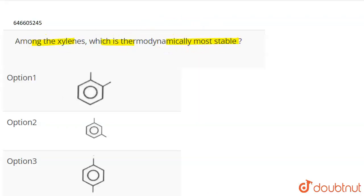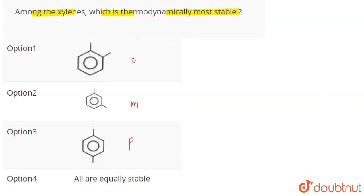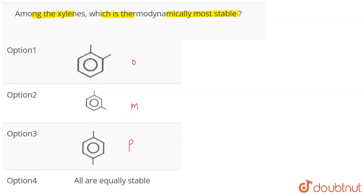So this is ortho xylene, this is meta xylene, and this is para xylene. You have to tell which of these is thermodynamically most stable. Now this group is methyl group, this is the methyl group.